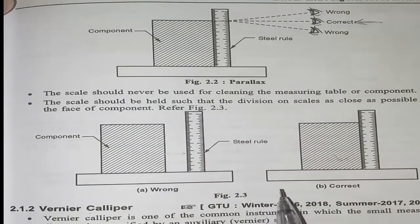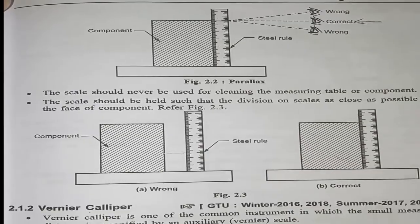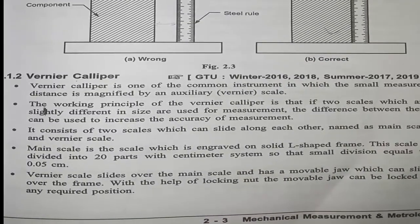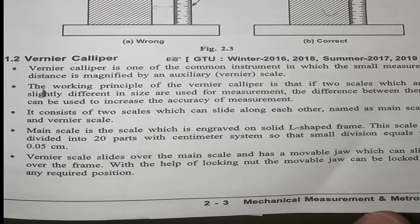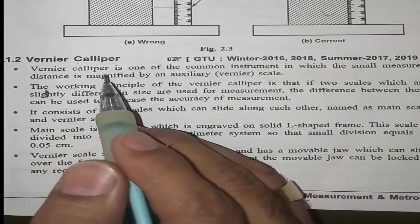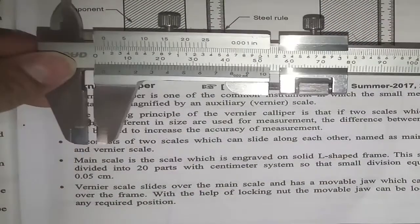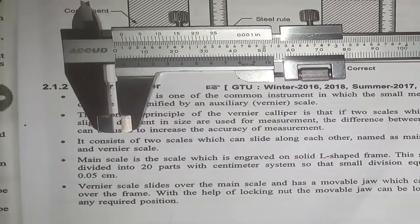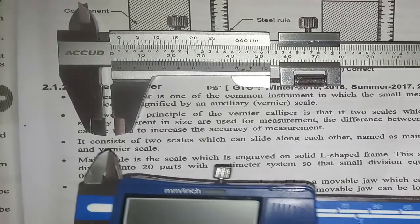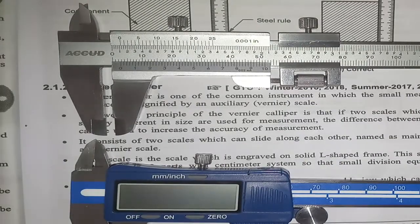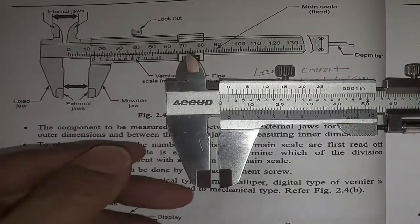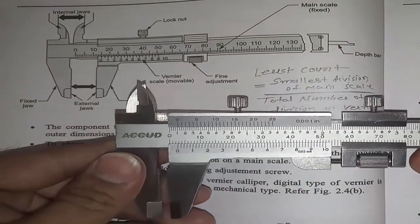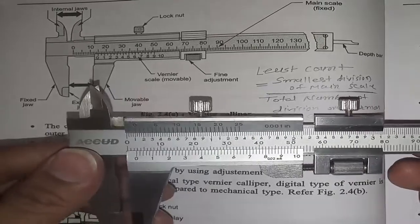The next instrument is the vernier caliper, which is a very important instrument. Most industries use the vernier caliper for linear measurement. There are two types: one is the digital vernier caliper, and the other is the manual type where you check the reading manually. Let us now look at the parts of the vernier caliper.